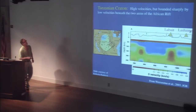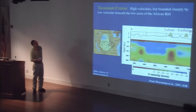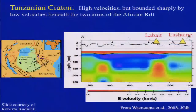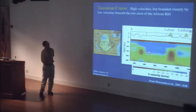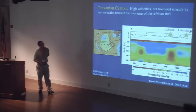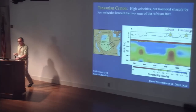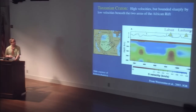Here's an example from the Tanzanian craton with S-wave tomography in cross-section. The Tanzanian craton differs from the Kaapvaal in that it's surrounded by active rifts on both sides. You can see in the tomography that the high velocities typical of the craton, down to only about 150 kilometers, are being eroded by low-velocity materials that probably represent the incoming material of the East African Rift.